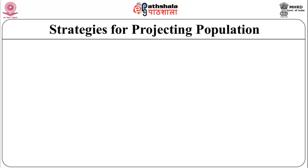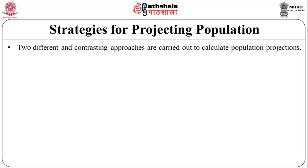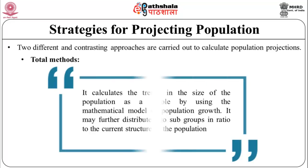Let us discuss the strategies for projecting population. Two different and contrasting approaches are used to calculate population projections. The first method is the total method, which calculates trends in the size of the population as a whole by using a mathematical model of population growth. It may further distribute results into subgroups in ratio to the current structure of the population.